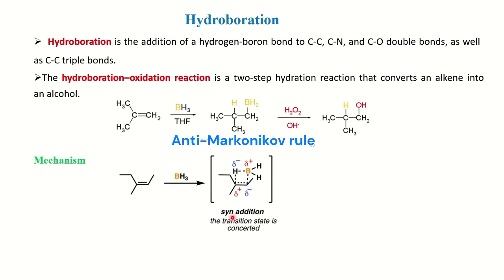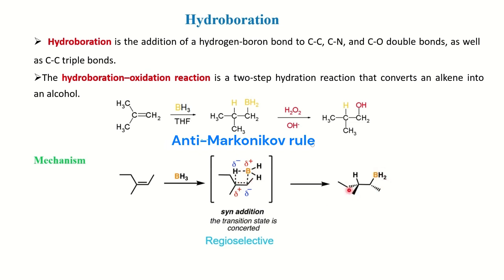The addition takes place via syn addition — from the same side. This means the addition is a regioselective reaction: there is a specific site where the reagent adds. BH2 always adds to the less sterically hindered site, and hydrogen adds to the more substituted carbon. The intermediate shows addition taking place from the same side in-plane.